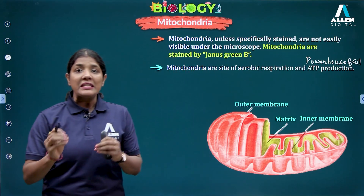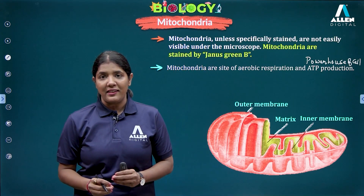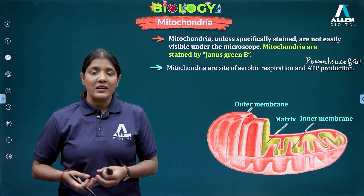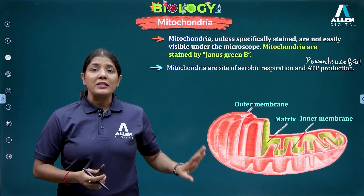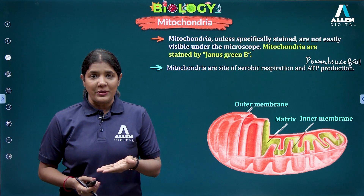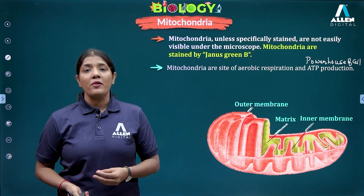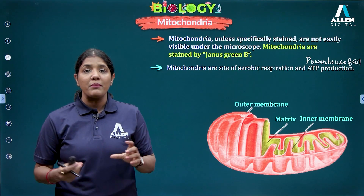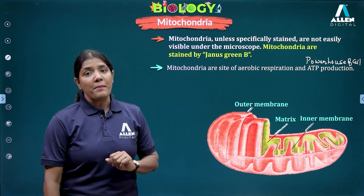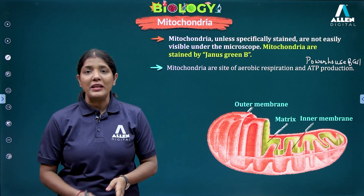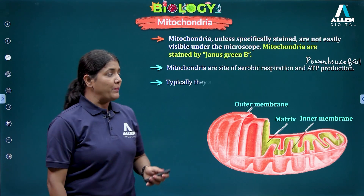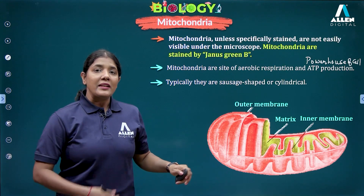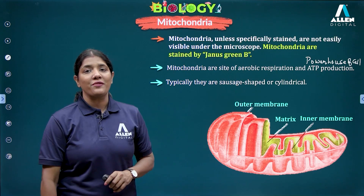ATP is the energy currency of the cell. Just as we use INR as currency in our country, the cell uses ATP as its energy currency. ATP production occurs in maximum numbers inside the mitochondria, hence it is called the powerhouse of the cell. Mitochondria are typically sausage-shaped or cylindrical.